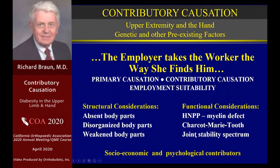Joint stability is another thing that affects the upper extremity. The joint stability spectrum means that not everybody with lax joints has Ehlers-Danlos syndrome. The Ehlers-Danlos patient can pull their cheeks out as far as their ears, but it doesn't always show to that degree in every patient with a joint instability problem. These things play out for the upper extremity surgeon, and everything also plays out on the social, economic, and psychological contributors to the disease, injury, or final evaluation.